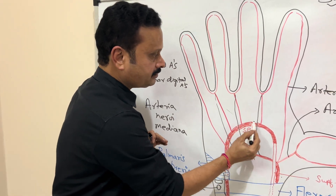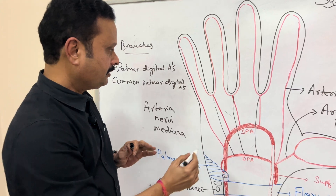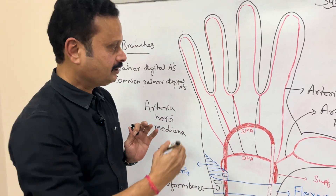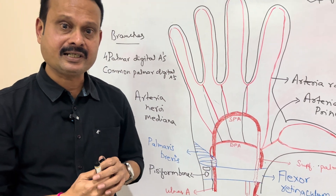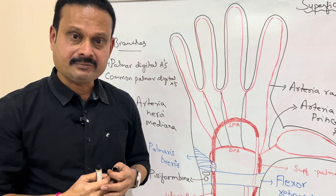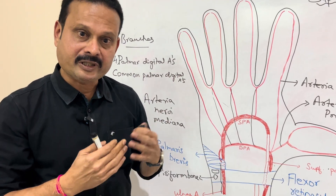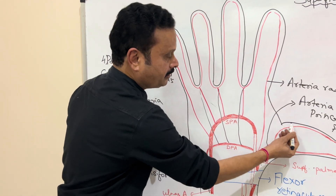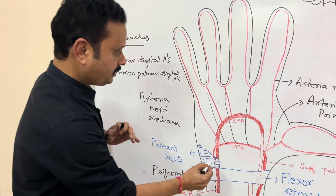The relations of the superficial palmar arch are: it lies under cover of the palmar aponeurosis, but over the long flexor tendons, over the lumbrical muscles, and over the digital branches of the median nerve. This arch lies at the level of the distal border of the extended thumb.